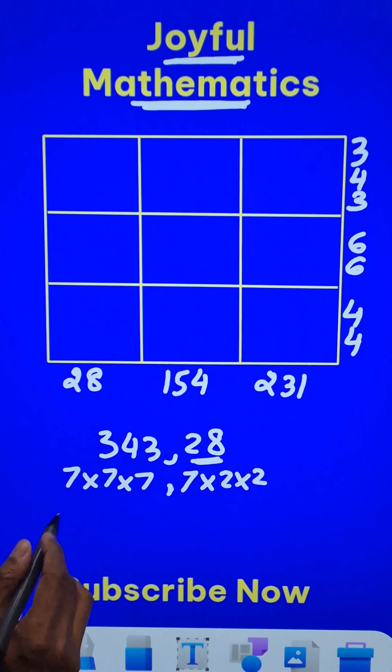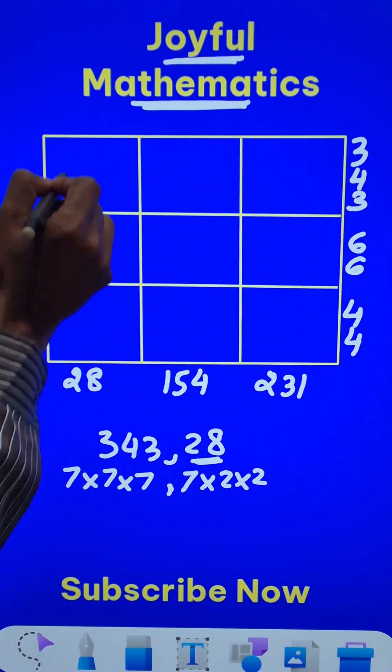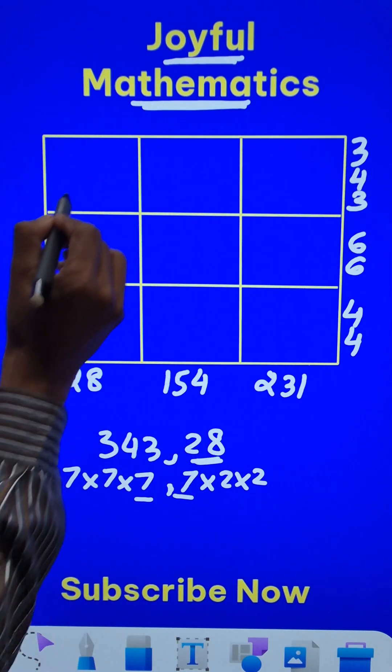So you just need to list down the common factors. For this cell, which is the intersection of 343 and 28, there is only one common factor, 7.